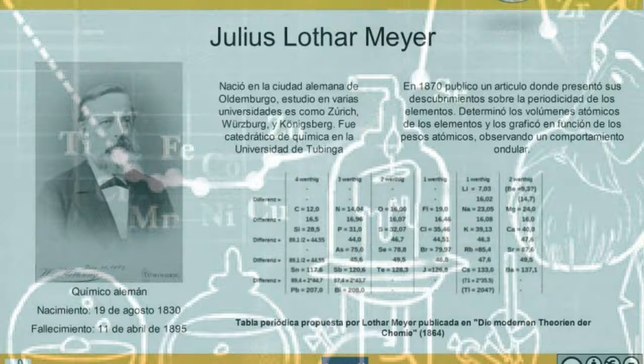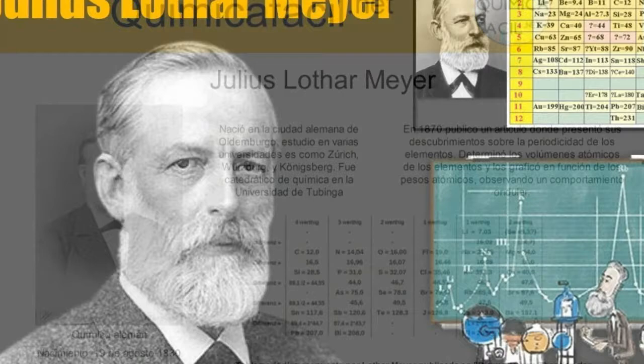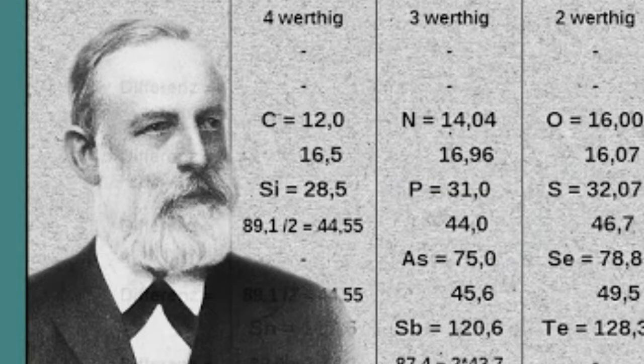Both Mendeleev and Meyer worked with Robert Bunsen. He never used his first given name and was known throughout his life simply as Lothar Meyer. Lothar Meyer was born in Veril, Germany, then part of the Duchy of Oldenburg. He was the son of Friedrich August Meyer, a physician, and Anna Biermann.